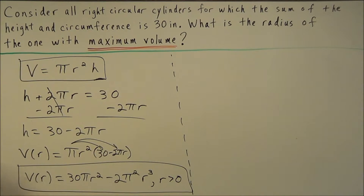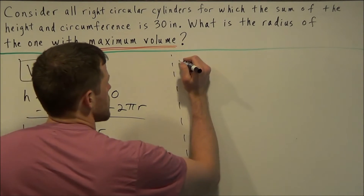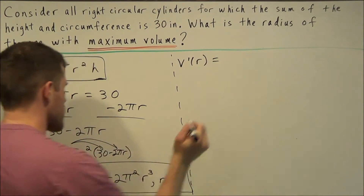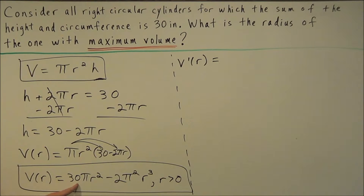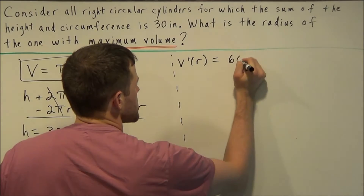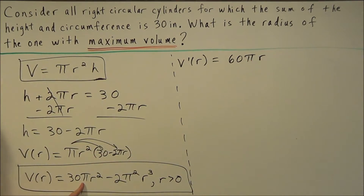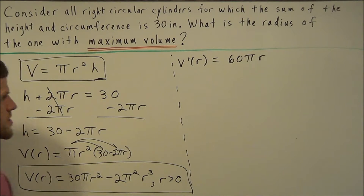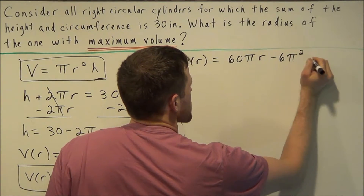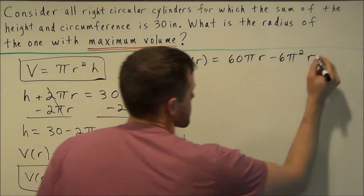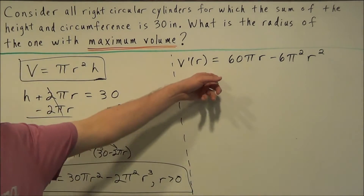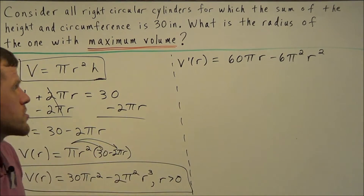Next we're going to find an absolute maximum value using the concept of finding an extreme value, so we take the derivative of our function. V prime of r, using the power rule: 2 times 30π gives us 60π r to the first power, and then the power rule on r cubed gives us 3 times negative 2π squared, which is negative 6π squared r squared.